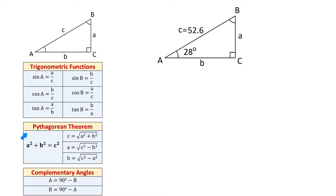Below we have the Pythagorean theorem: A squared plus B squared equals C squared. If we know two sides of a right triangle, we can use the Pythagorean theorem to find the missing side. To find the hypotenuse C, we use C equals the square root of A squared plus B squared. To find side A, the formula is the square root of C squared minus B squared. And to find side B, the formula is the square root of C squared minus A squared.